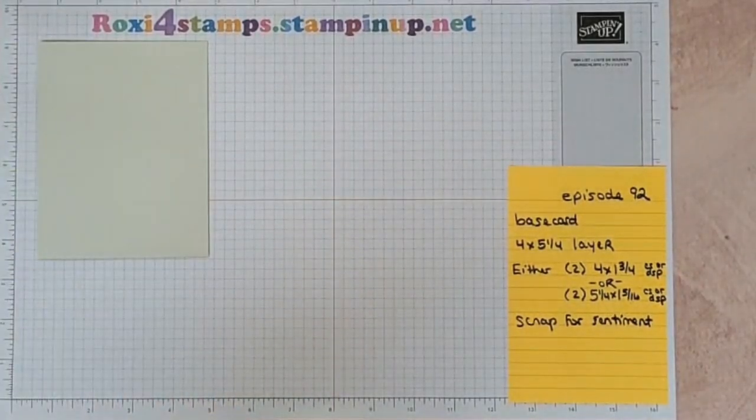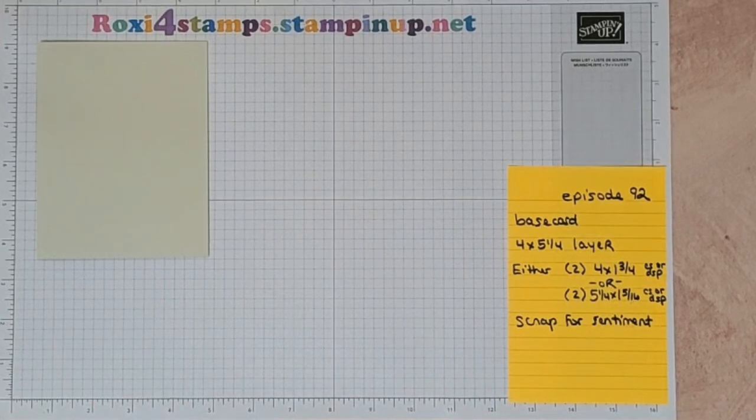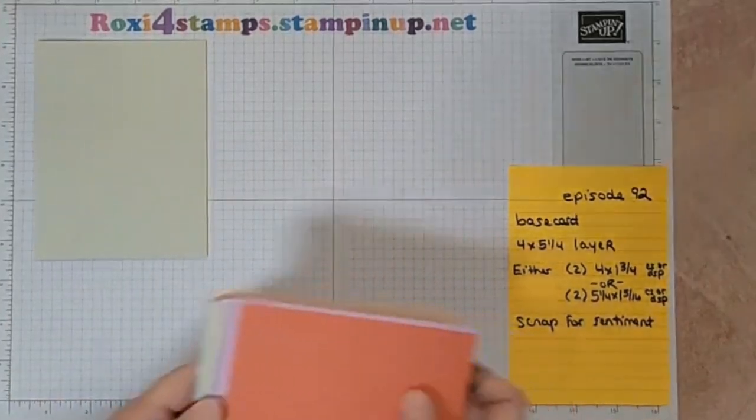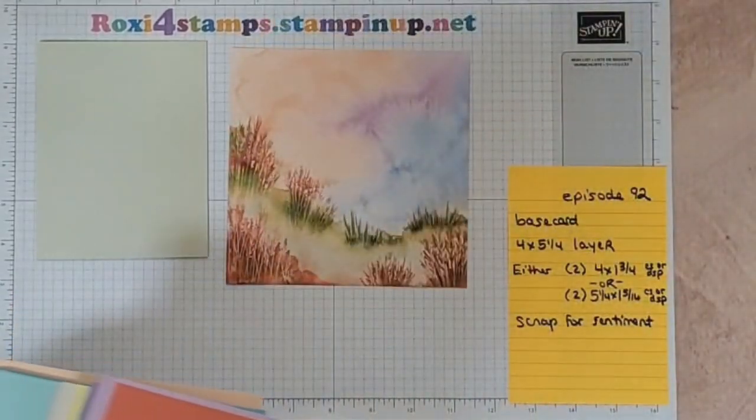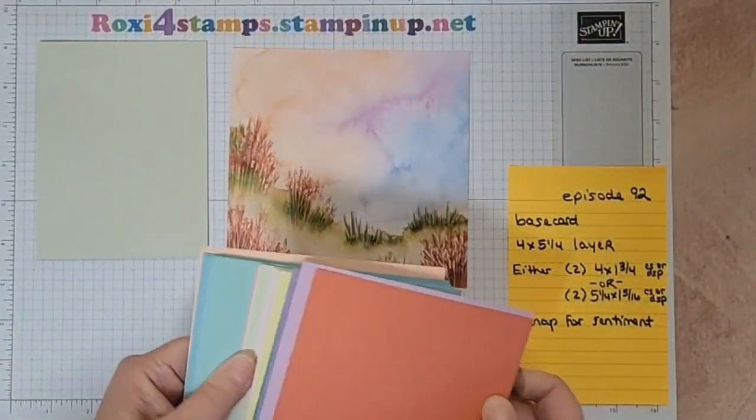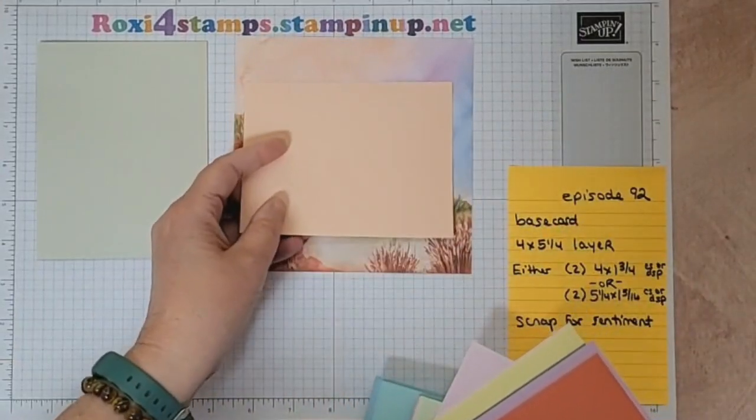That's eight and a half by five and a half, scored at four and a fourth. I'm going to get a layer, let me pull out my layer thing to see if I have something because I want to coordinate with this card stock, this DSP that I'm using.